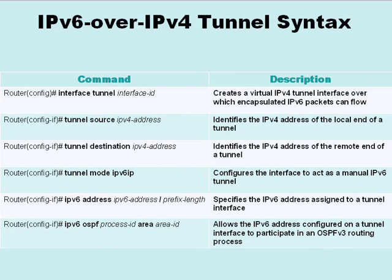To create a virtual tunnel interface in global configuration mode, we say 'interface tunnel' and give a locally unique interface ID. In interface configuration mode, we specify source and destination IPv4 addresses. In our lab these are adjacent routers, but it doesn't have to be that way — if we have an IPv4 routing protocol configured, we could reach a remote IPv4 address several router hops away. The tunnel does not have to exist just between two adjacent routers.